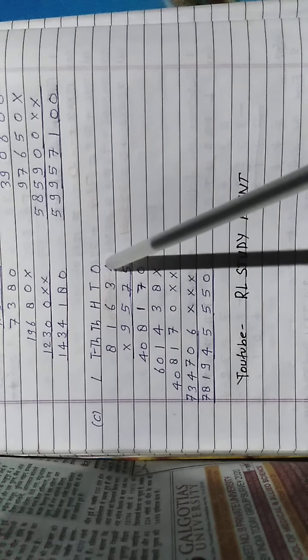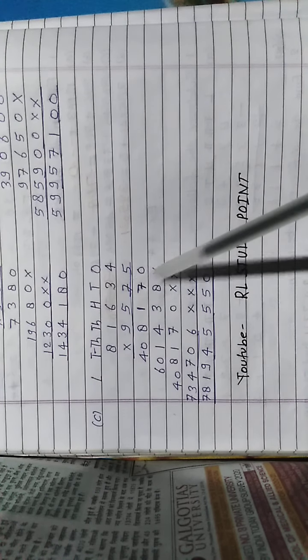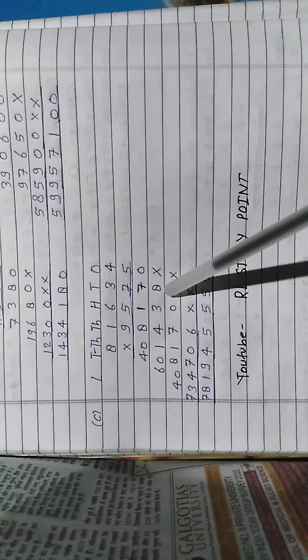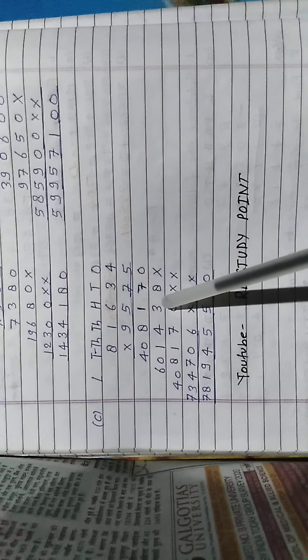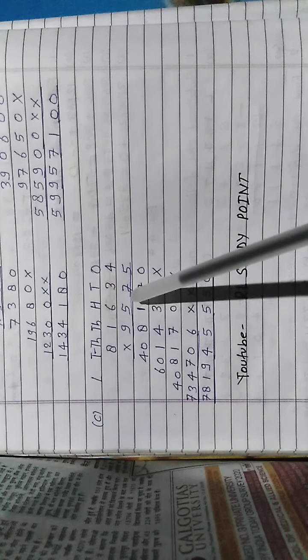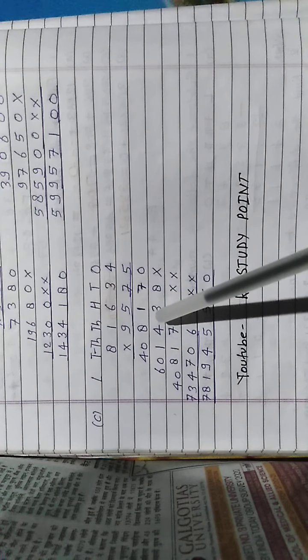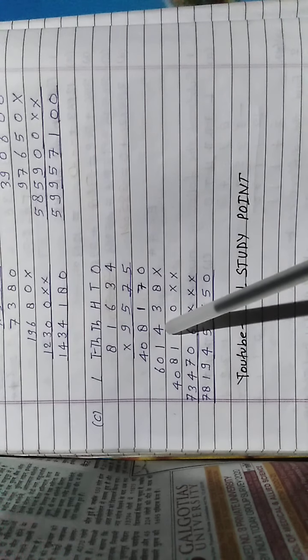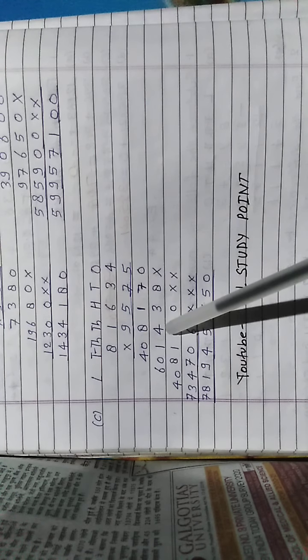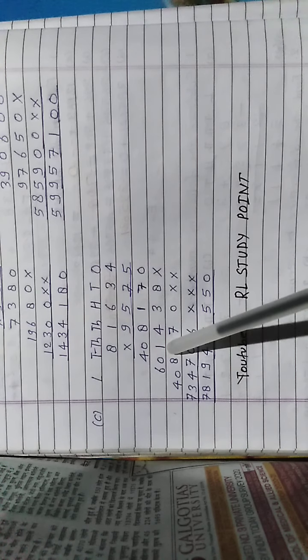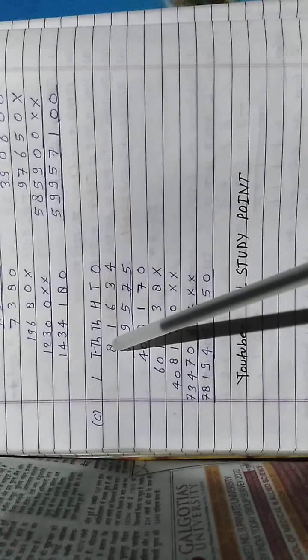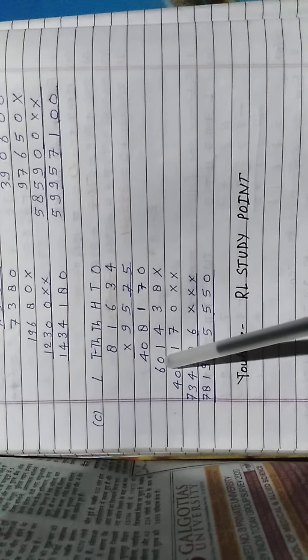This 7 here multiplication symbol. 7 times 4 is 28, 8 carry 2. 7 times 3 is 21 plus 2 is 23, 3 carry 2. 7 times 6 is 42, 2 plus 2 is 44, 4 carry 4. 7 times 1 is 7, 4, 11, 1 carry 1. 7 times 8 is 56 plus 4 we get 60.